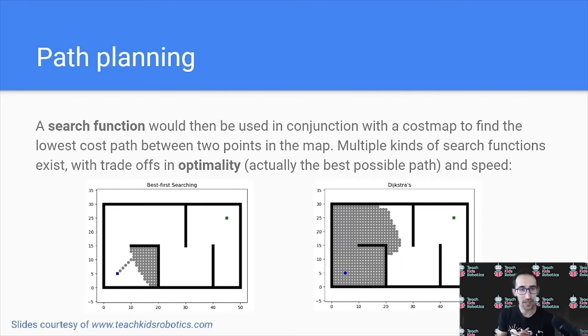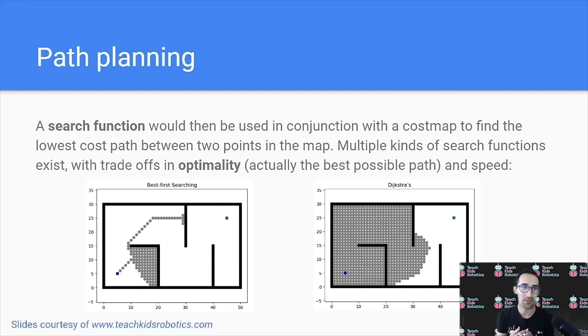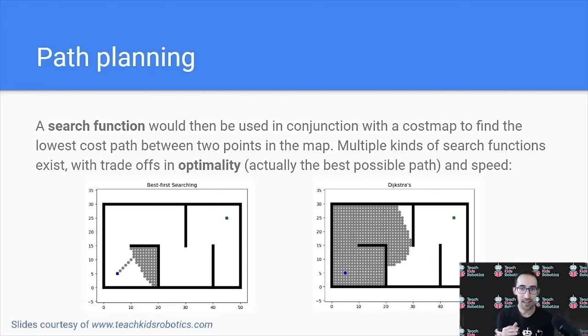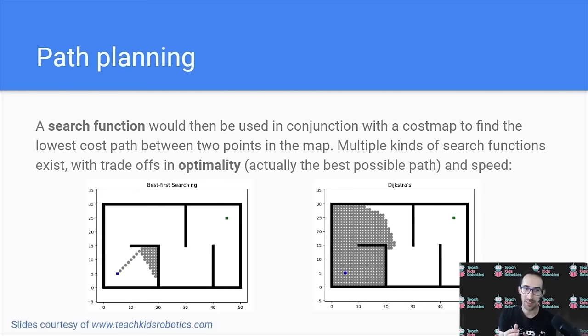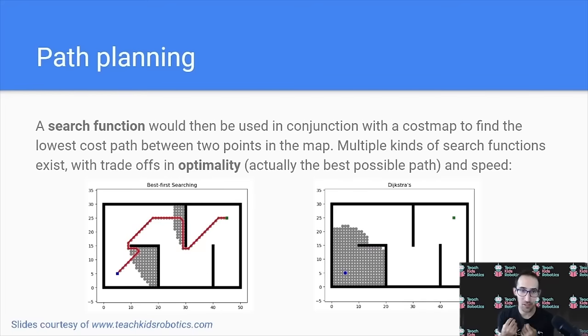Now, consider we have this cost function, we want to be able to actually determine how do we get from point A to point B in the map. And to do so, we use something known as a search function, which basically attempts to find a path between the two points on the map. And this path is found basically in an exploratory manner. And there are different kinds of search functions that have different behavior, which result in trade-offs in optimality, which is whether or not the path found is actually the shortest, or the best, depending on what your metric is.